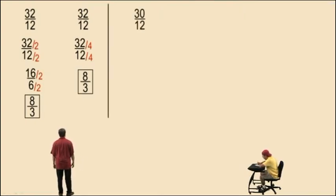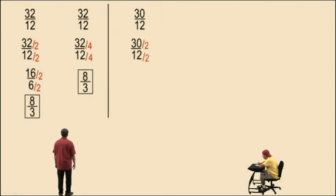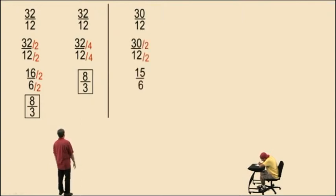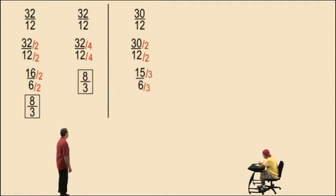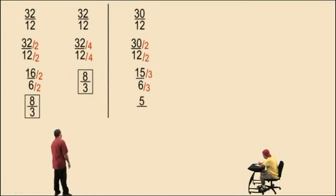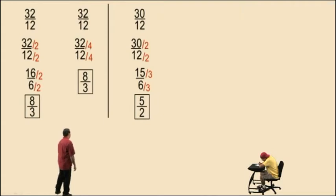Let's do another problem: 30 divided by 12. Both are even, so we can divide by 2 and that gives us 15 over 6. Now 15 and 6 have a common factor of 3. 15 divided by 3 is 5, 6 divided by 3 is 2, and that gives you 5 halves.